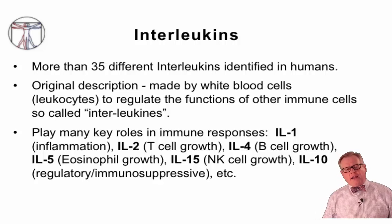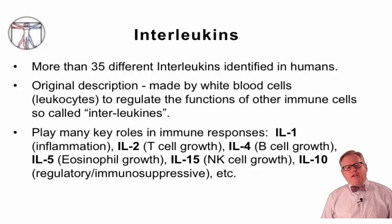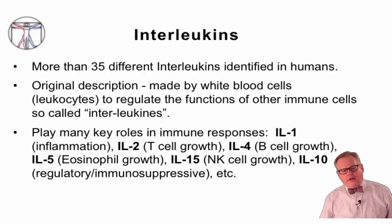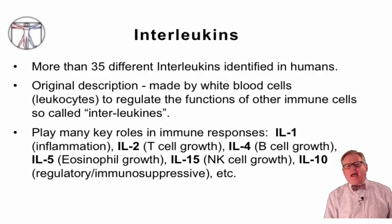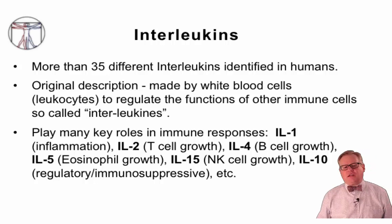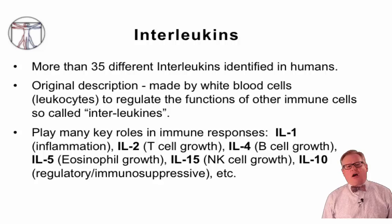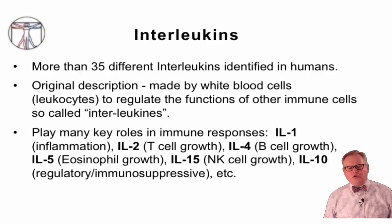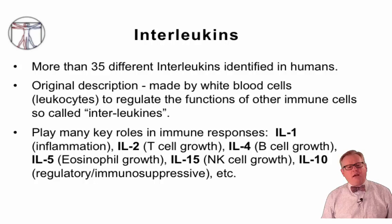The interleukins are also a large family with more than 35 different interleukins identified in humans. Originally, interleukins were described as cytokines made by one white blood cell that regulated the function of other immune cells — hence the name. They play many roles in the growth and development of lymphocytes and in the activation of innate immune cells. Key interleukins include interleukin-1 in inflammation, interleukin-2 as a major T cell growth factor, interleukin-4 as a major B cell growth factor, interleukin-5 for eosinophil growth, interleukin-15 for NK cell growth, and interleukin-10 as an immune regulator.